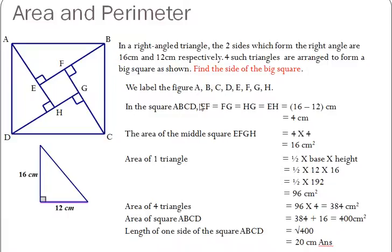Now in the square ABCD, we note that EF is equals to FG is equals to HG is equals to EH. And this is equals to 16 minus 12 cm.